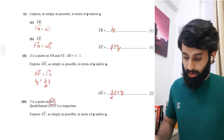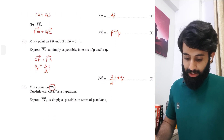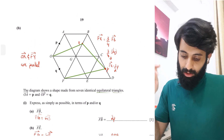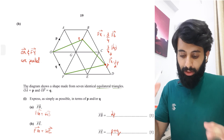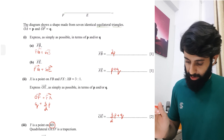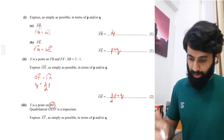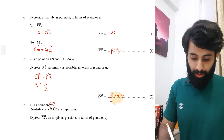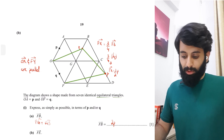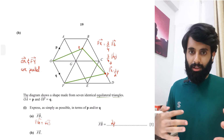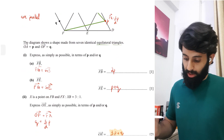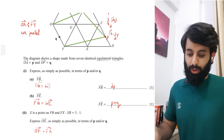The question asks us to express XY as simply as possible in terms of P and/or Q. To do this, we use our understanding of parallel vectors. We already know OX = 3/2 P + Q. Now I need to get my hands on FY so I can set up a ratio and compare coefficients.